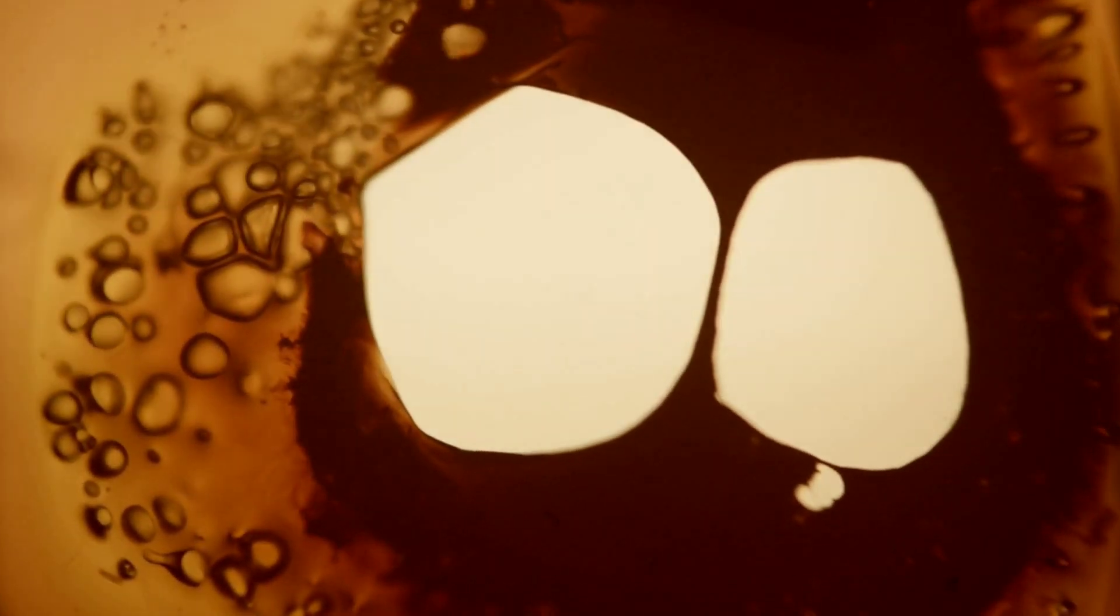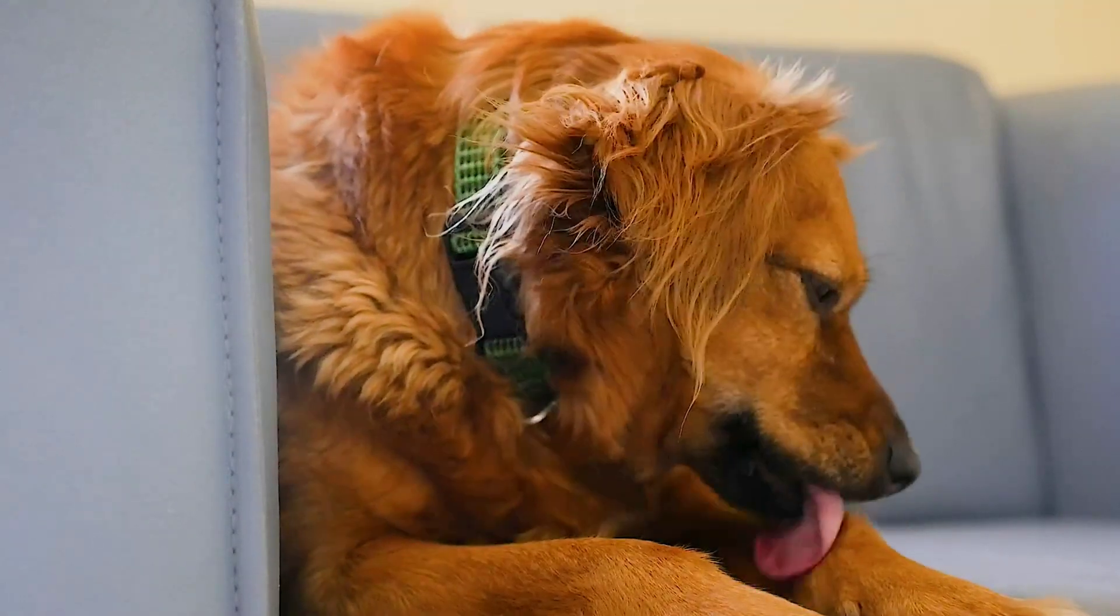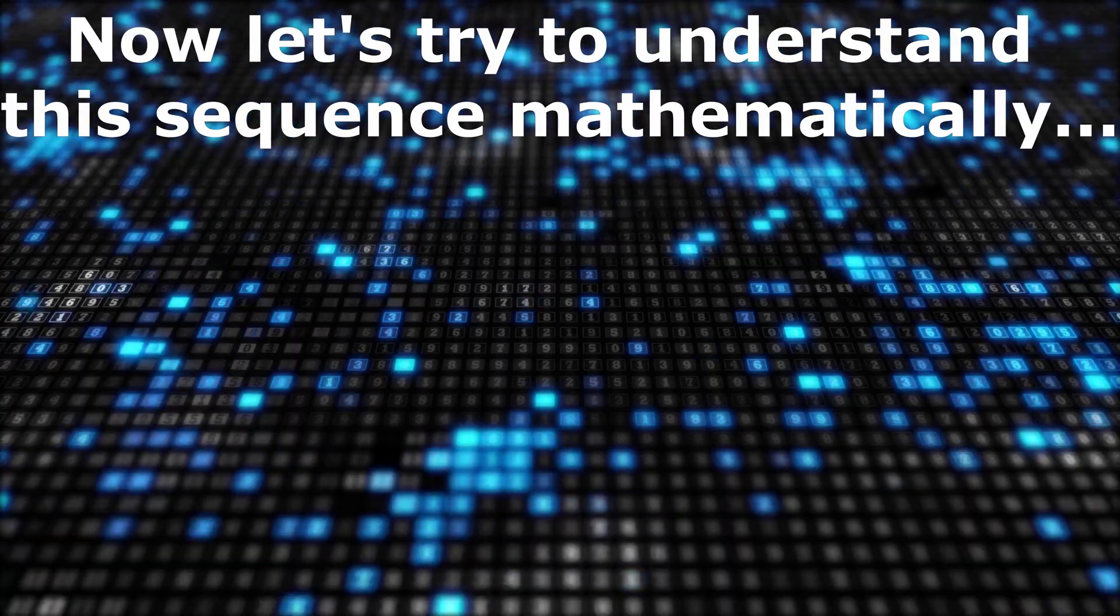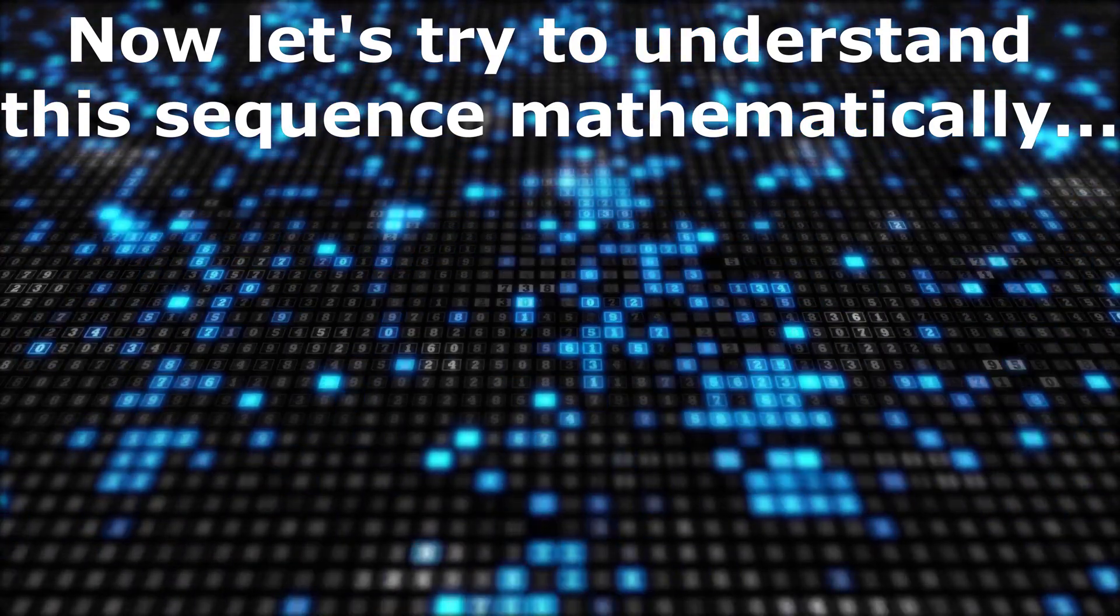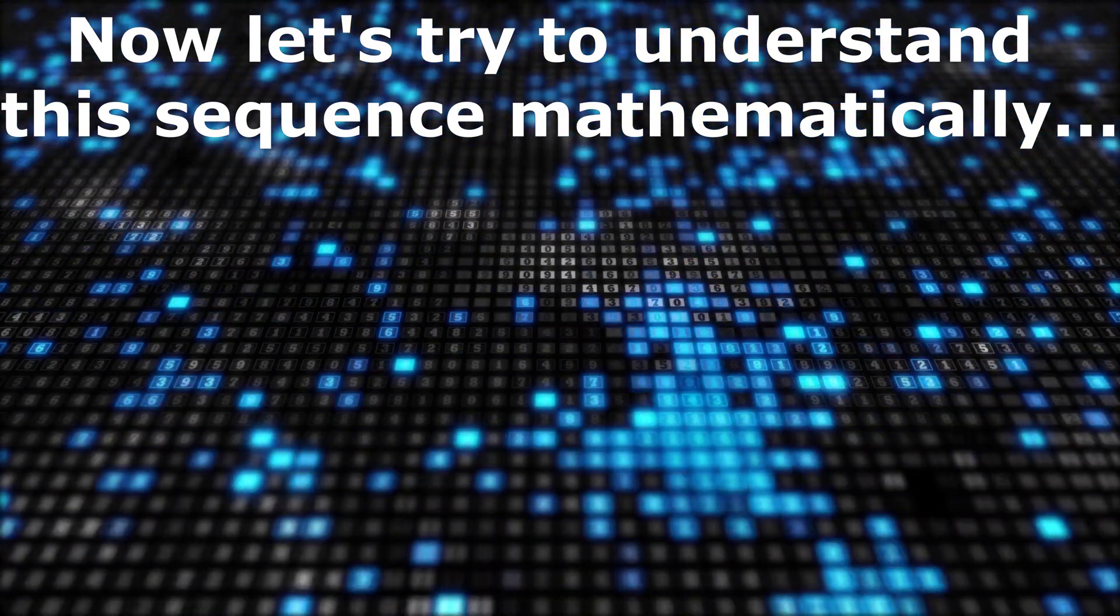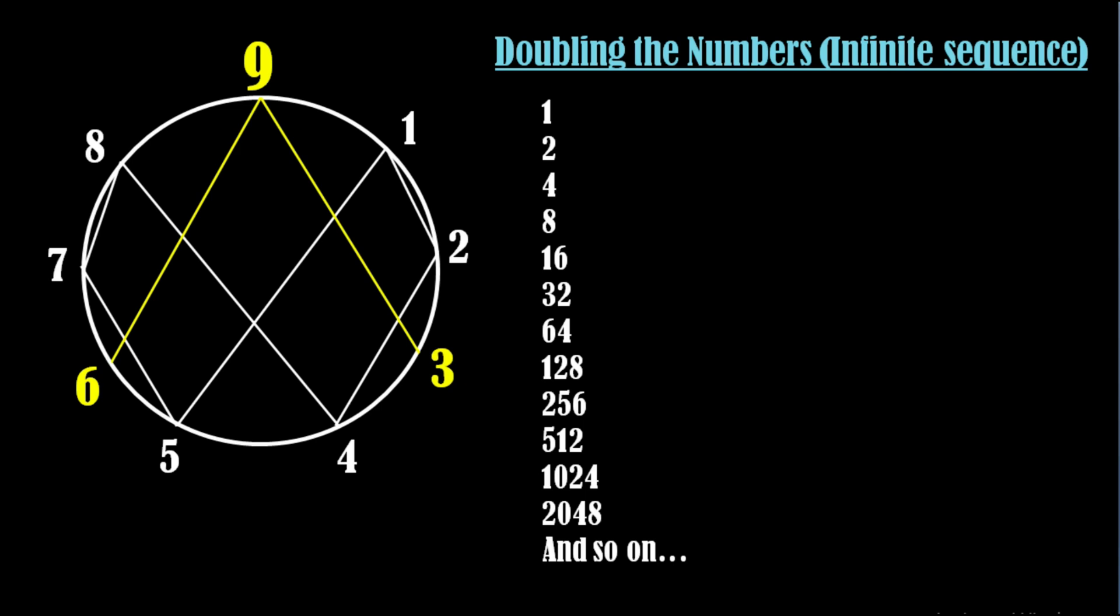In this way the doubling sequence continues, and finally we have a full multicellular organism. Now let's try to understand this sequence mathematically. See, here is a sequence of doubling of numbers.